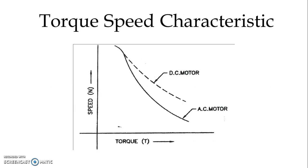We can see the torque speed characteristic of the AC series motor in comparison with the DC series motor. Here we can see that the characteristic of AC series motor is steeper compared to DC series motor. So for any given torque the change in speed is less compared to DC series motor.